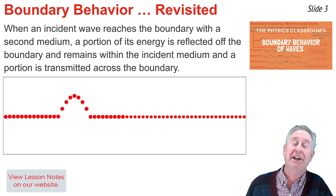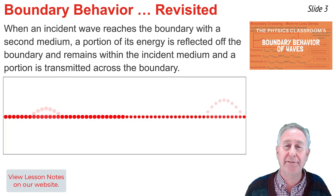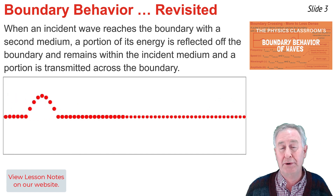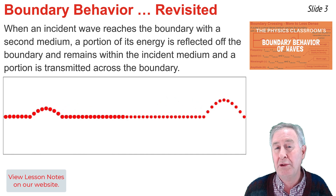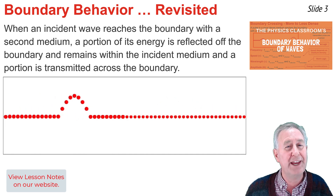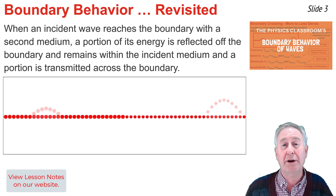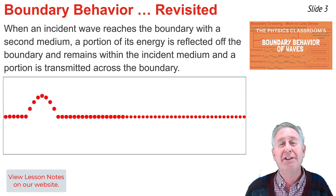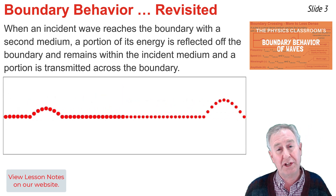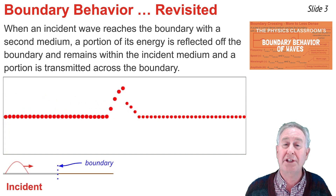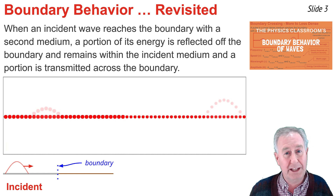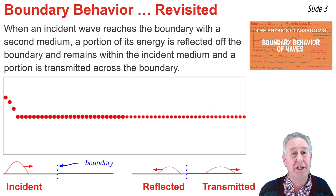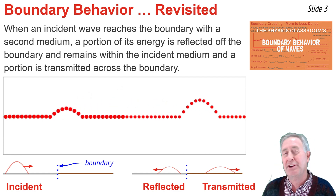In a previous video I discussed the boundary behavior of waves, and I've left a link to that video in the description if you need to review it. We learned that when an incident wave approaches the boundary with a second material, a portion of its energy reflects off that boundary and remains in the original material, and a portion is transmitted across into the second material. The incident pulse is the pulse approaching the boundary; the reflected pulse carries the reflected energy, and the transmitted pulse carries energy across the boundary.